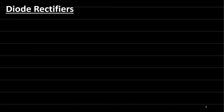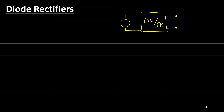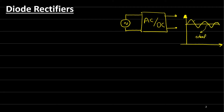A rectifier is a circuit or a converter that converts an AC power waveform into a DC, but not necessarily a regulated waveform. So the input of the rectifier is AC and the output is DC. Usually this rectifier is connected to an AC power supply, and the output should be a DC output most or all of the time. This output must always be positive, above zero.